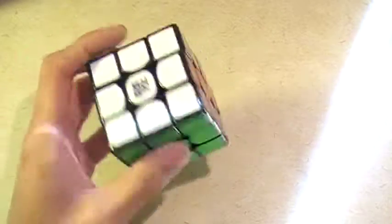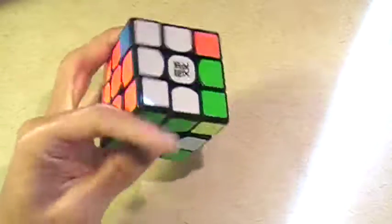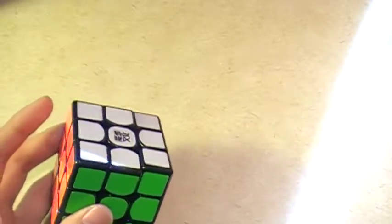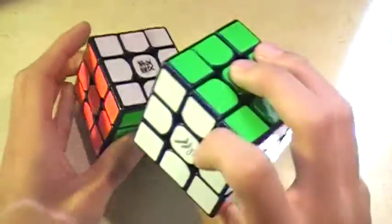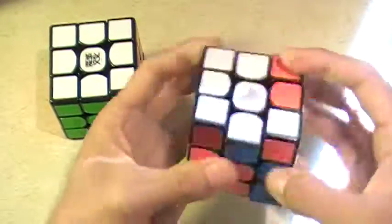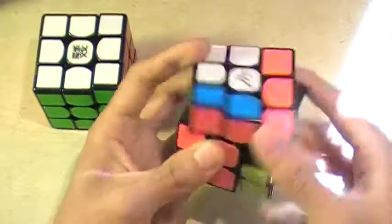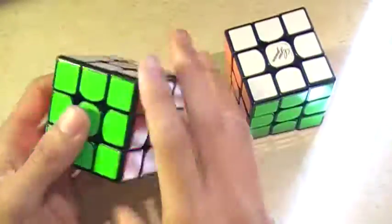So I'll just start with 3x3. I don't do 2x2 so I don't really have a main. I actually don't have a 2x2 anymore at all. My main 3x3 is the GTS and along with the Yusha. So I like both of these cubes. I can't really choose which one I like more. I kind of use them interchangeably.